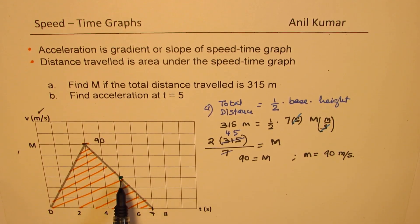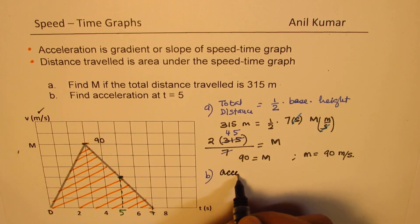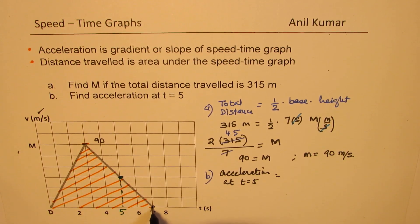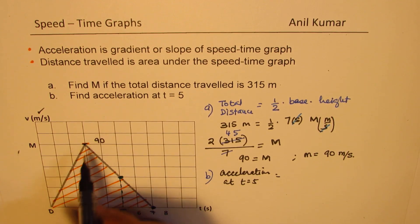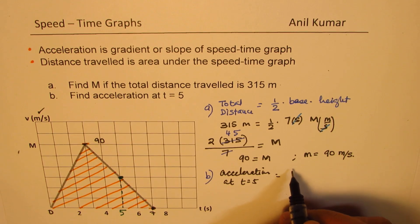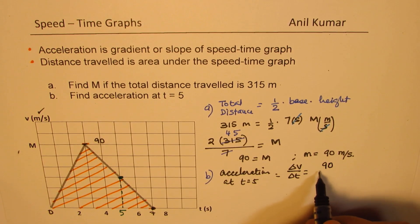Now, we need to find acceleration at this point. That is part B. Acceleration at this point will be rate of change. So at this point, rate of change will be what? T equals to 5. So we can consider these two points. So if we consider these two points, then change in this value, which is y value, is rate of change of velocity over rate of change of time. The velocity goes from 0 to 90. So the rate of change is 0 to 90.